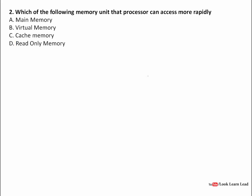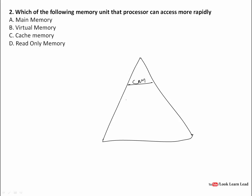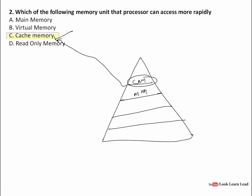The next question: which memory unit can the processor access most rapidly? Looking at the memory hierarchy — cache memory is at the top, main memory is below that, and after that we have magnetic disks and magnetic tapes. So it is cache memory which is nearest to the processor. The answer is C: cache memory.